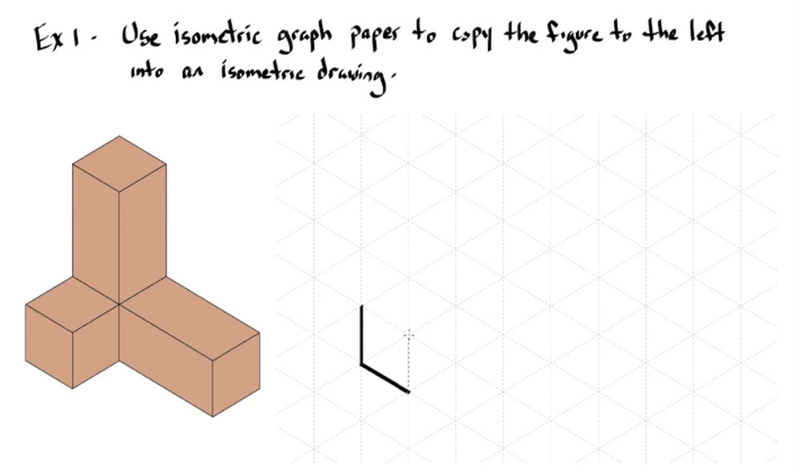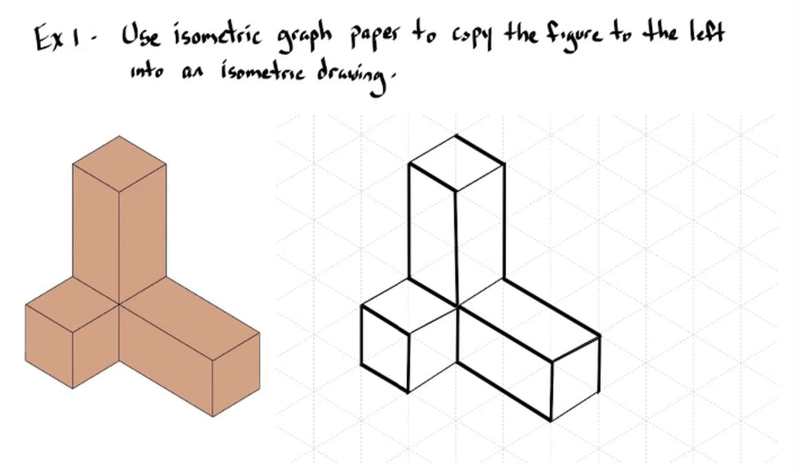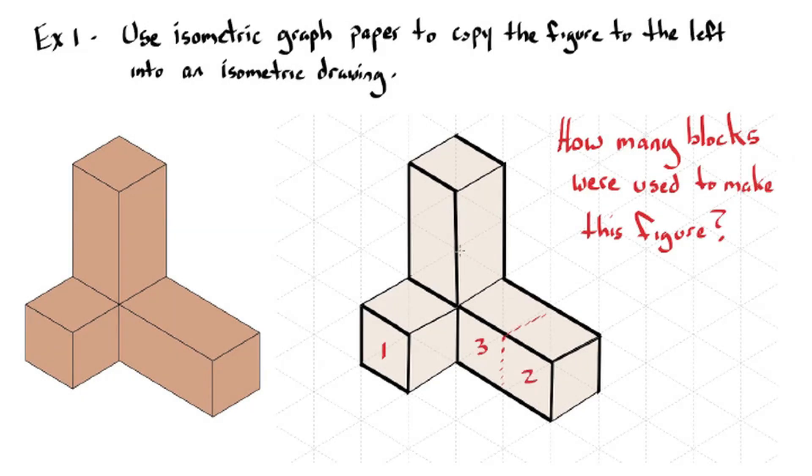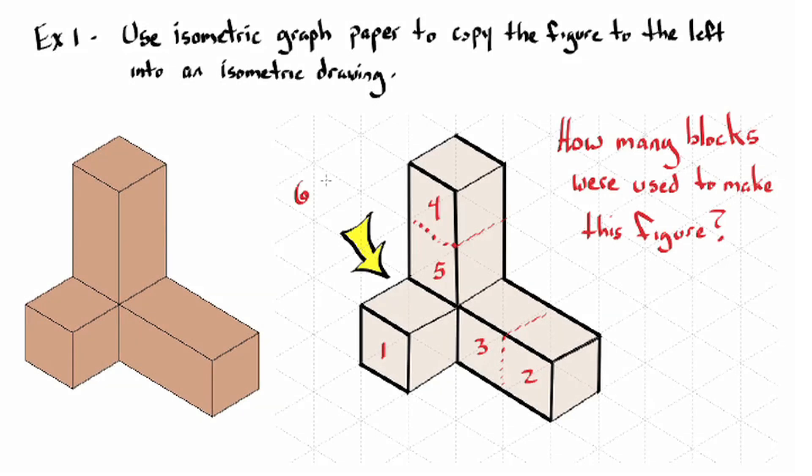All right, how did you do? What we're going to do for this one is find all the edges of the figure and draw them onto the isometric graph paper. This just takes a little bit of practice to see it. I'm going to shade it in here so you can see it better. So how many blocks were used to make this figure? What do you think? Six. Don't forget about that hidden one underneath.